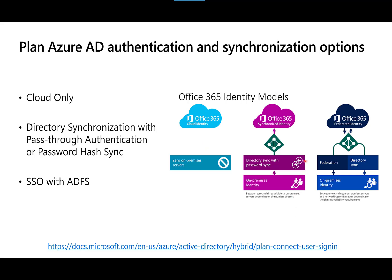The second scenario is directory synchronization with either pass-through authentication or password hash sync — probably the most common scenario deployed in production. When a company has a security requirement to immediately enforce a condition on a user account, such as locking an account or enforcing password policies or sign-in hours, pass-through authentication is the method of choice.